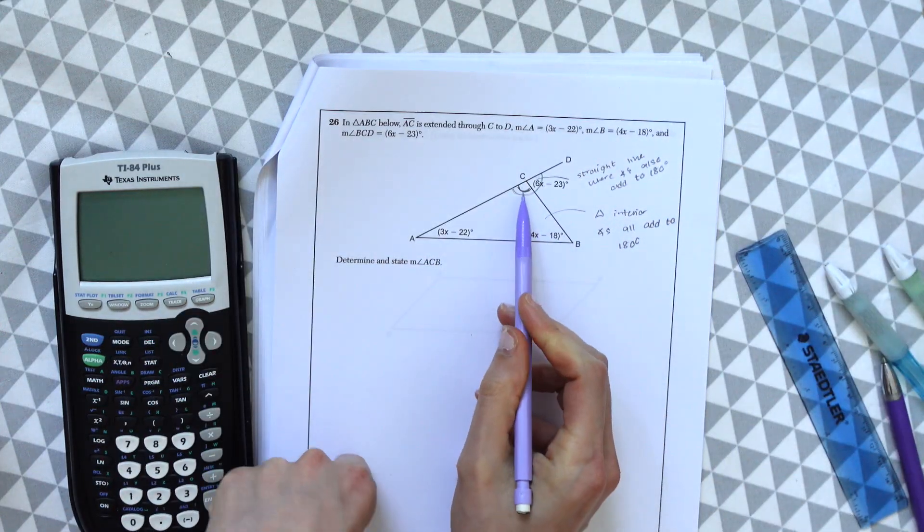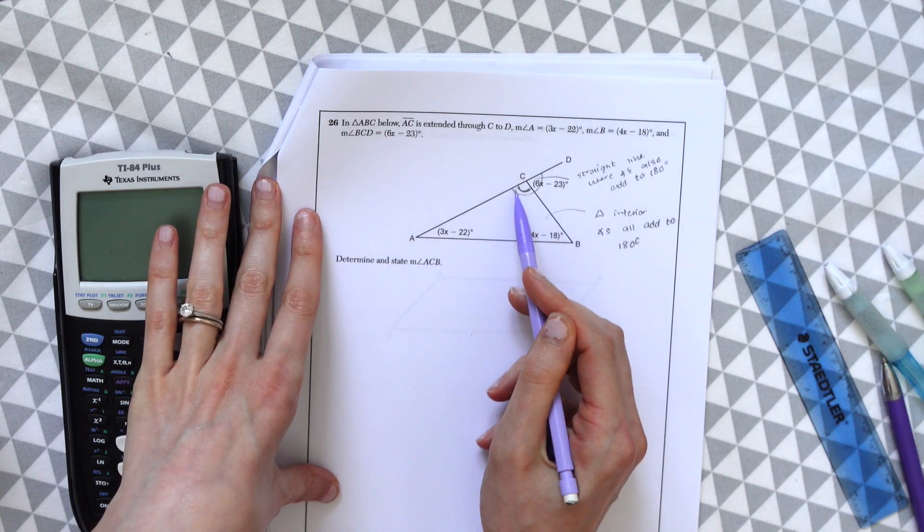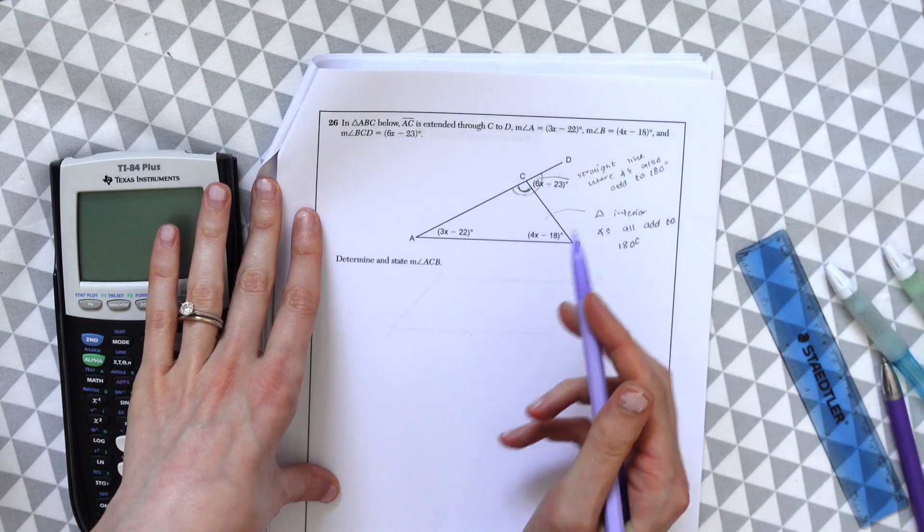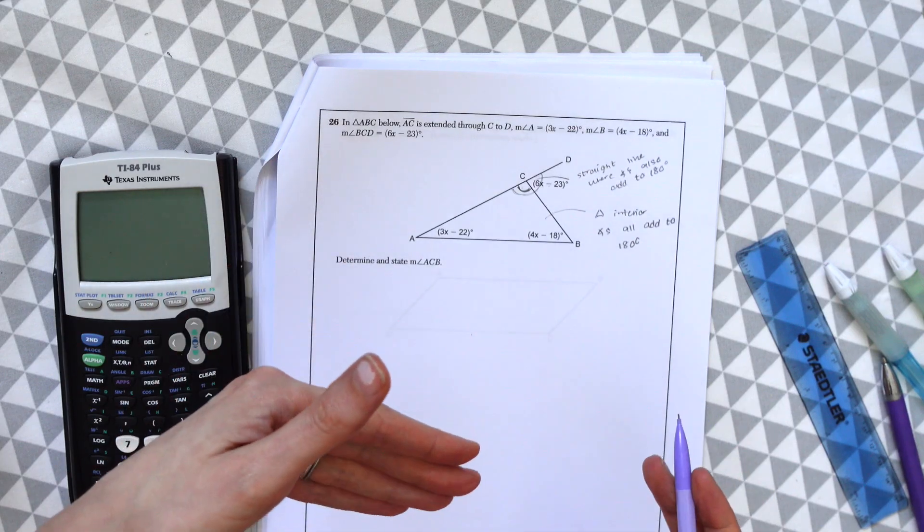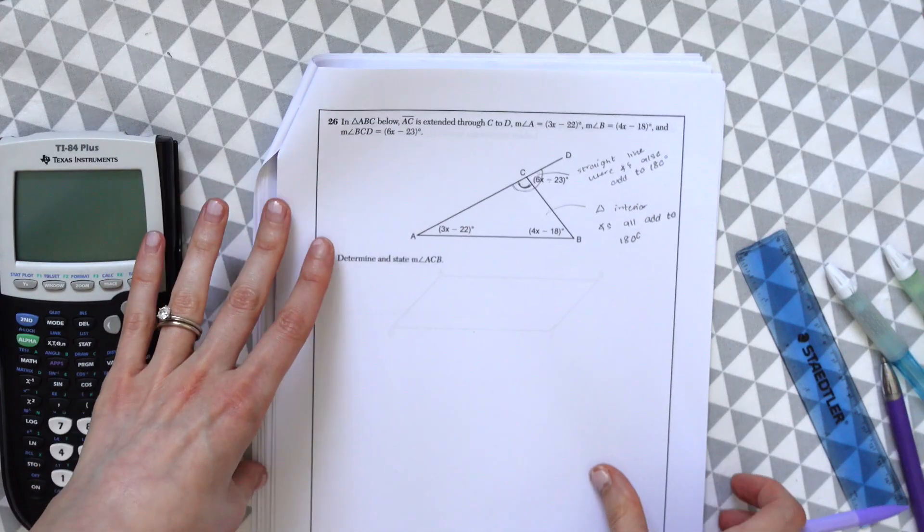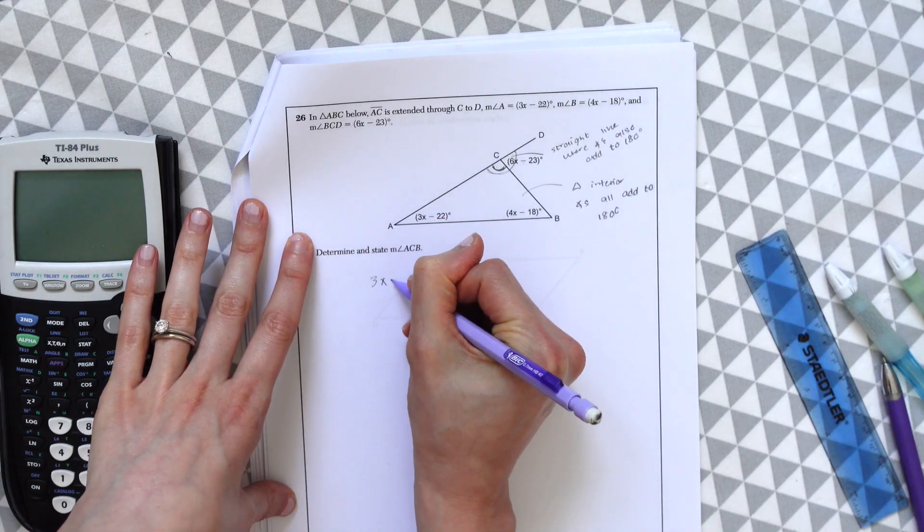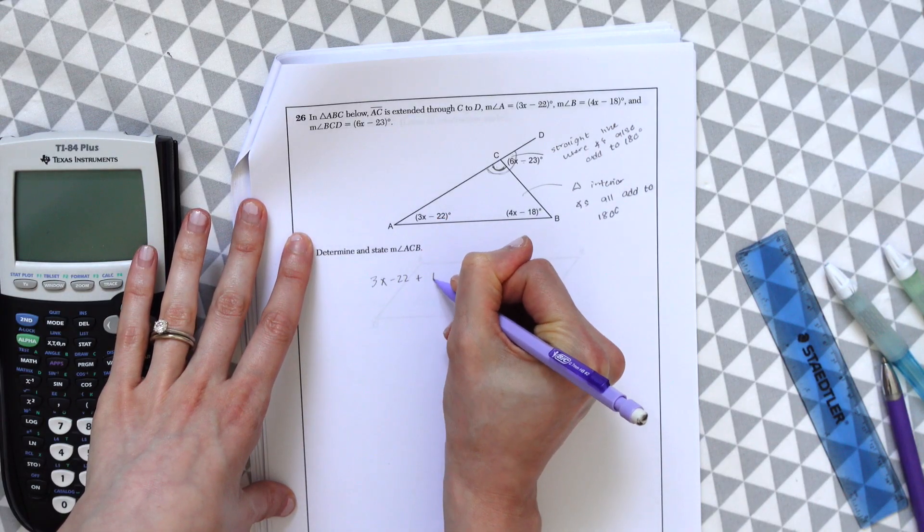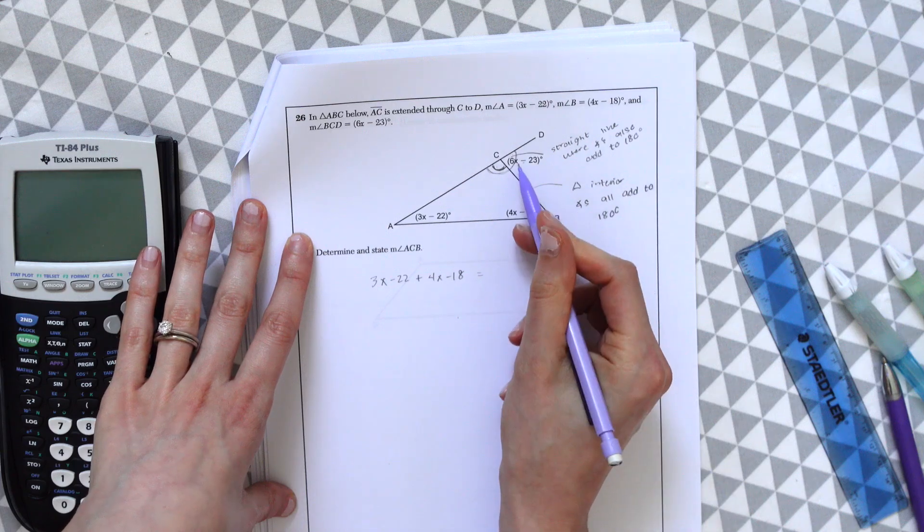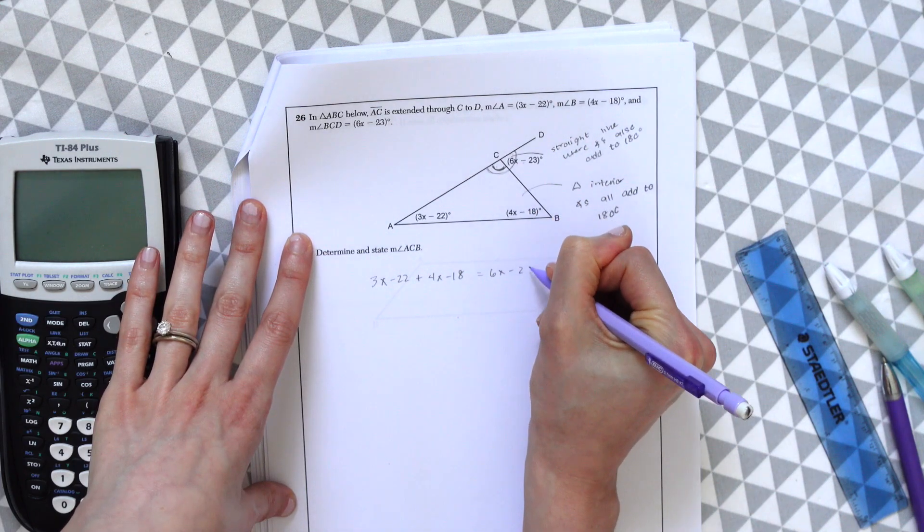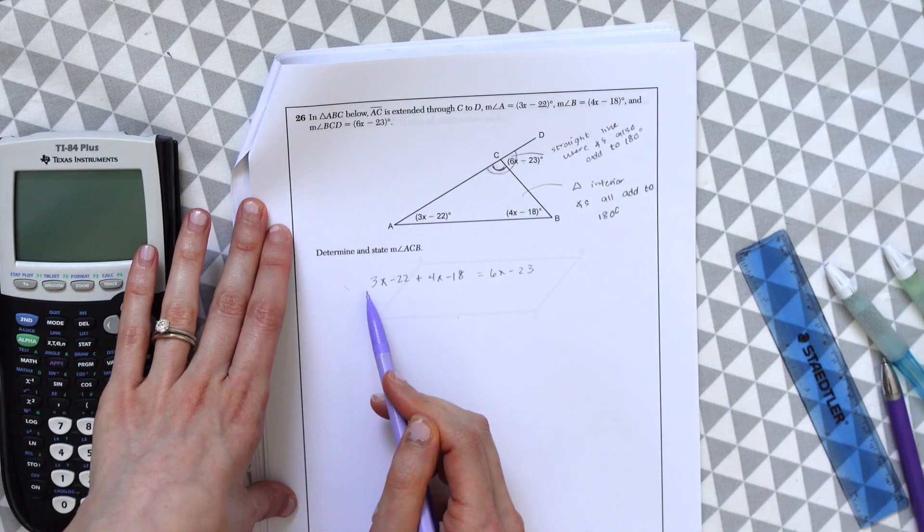So knowing that we can find the value of this. If you think about how to find this missing angle here, we know that 180 minus this is going to give us angle C. And we know that 180 minus 3x minus 22 plus 4x minus 18 is also going to give us this angle C. So what we could do is actually set these two equations equal to each other. So we can say 3x minus 22 plus 4x minus 18, so we're adding these two angles. And we're saying that's equal to 6x minus 23.